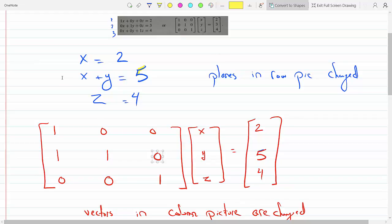Matrix multiplication is row times column. So 1 times x is x, 1 times y is y, we're adding them, so x plus y plus 0 times z, and that would give me 5 on the right-hand side.